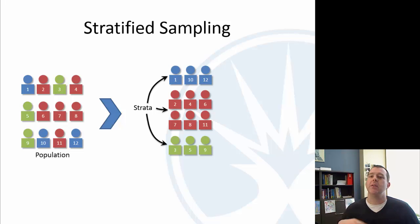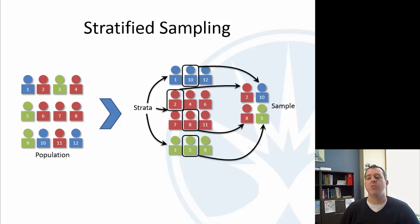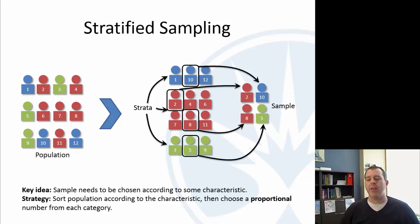Either drawing numbers from a hat, ping-pong balls, using a computer, etc. So, I could draw 1 blue, 2 red, and 1 green, and that would get my four-person sample. The key idea here is, there might be, there has to be some characteristic that splits the population up, that you are interested in, and you want to make sure to get a proportional sample from each group.